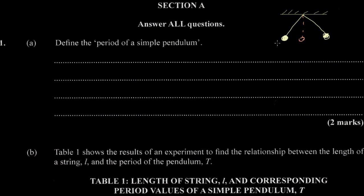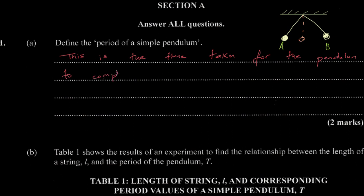We can consider one period to be the time it takes for the pendulum to go through one cycle. If we start at point A, it swings to B and back to A — that is one cycle. So the period is the time taken for the pendulum to make one complete cyclic movement.